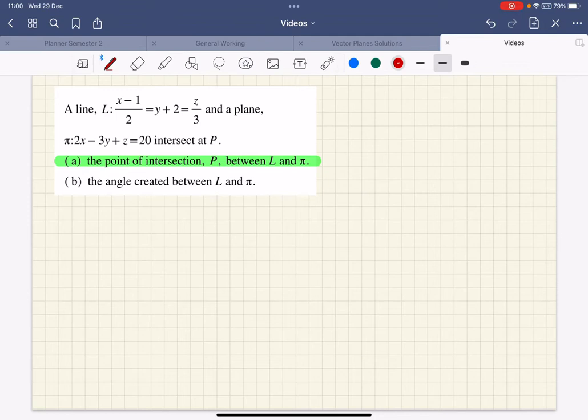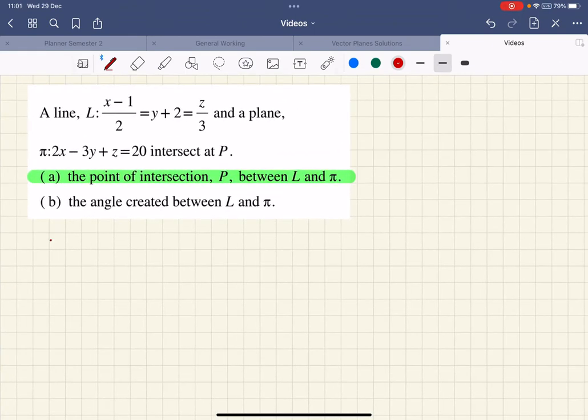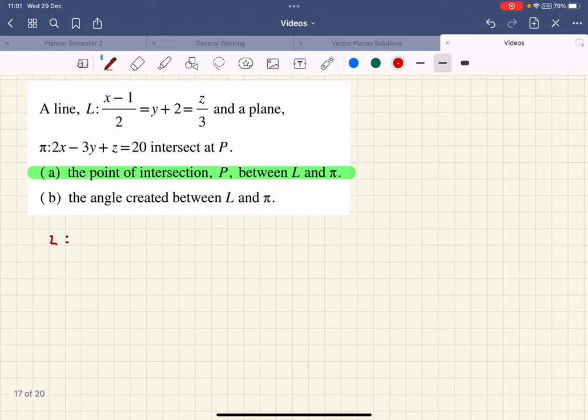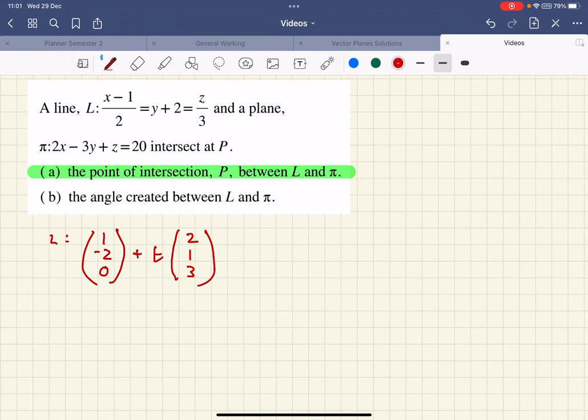First, let's have a look at that line. I'm going to write that line in vector form rather than Cartesian form. We know that it goes through the point: if it's x minus one, then the point is one; y plus two gives minus two; and z is zero. There's t lots of the vector, which is what it's divided by: two for x, one for y, and three for z. So that's the vector equation.